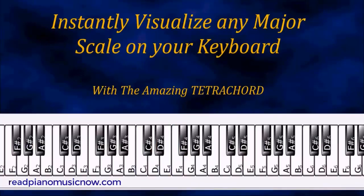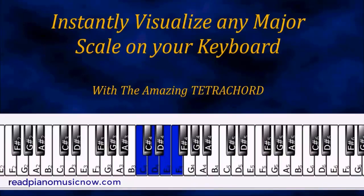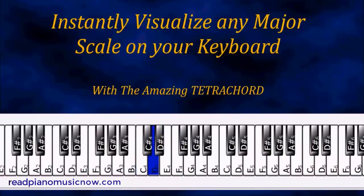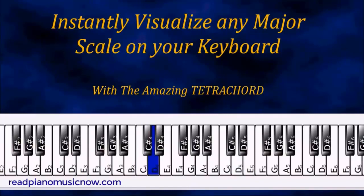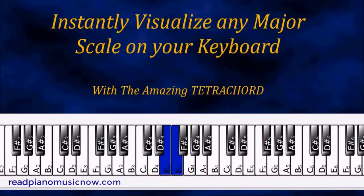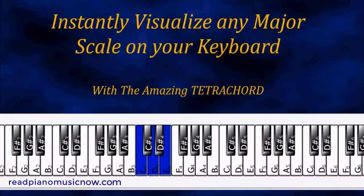Now we're going to look at a special tetrachord called the major tetrachord. The pattern for this is a whole step, followed by another whole step, followed by a half step. So the first three notes are a cluster of notes that are a whole step apart from each other.